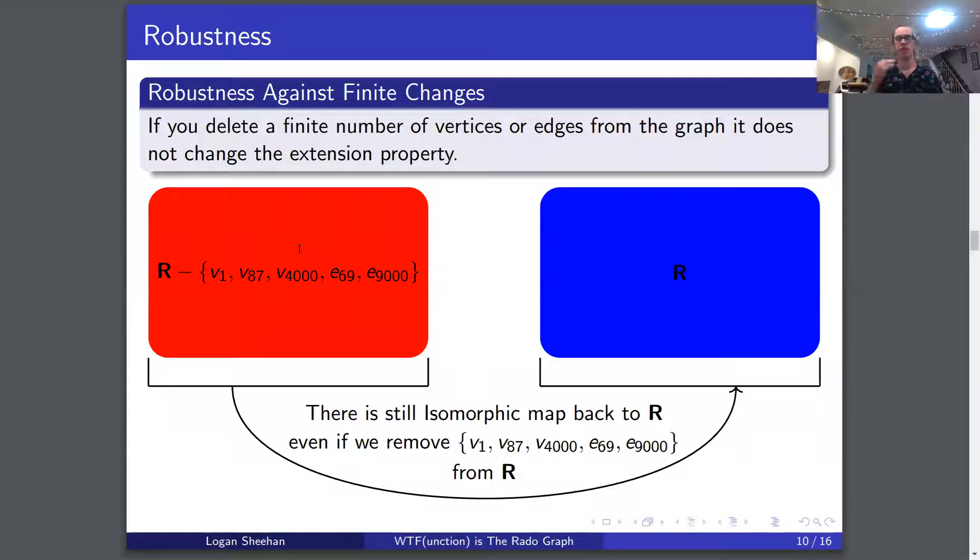Now onto robustness of the Rado graph, and I think this is really cool. If you delete a finite number of vertices or edges from the graph, it does not change the extension property. What that means is it is still isomorphic to R, because it still has the extension property. In our example, we take R and get rid of the first, 87th, and 4000th vertices, and the 69th and 9000th edge. Why did I choose those numbers? I don't know, this is just an example. Well, there will still be an isomorphic map back to R even if we remove all of these from R.